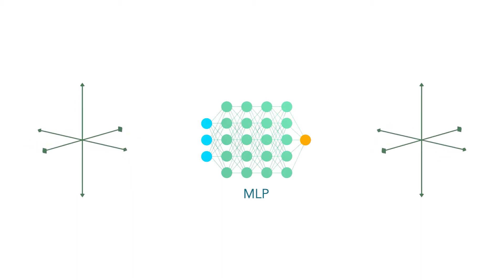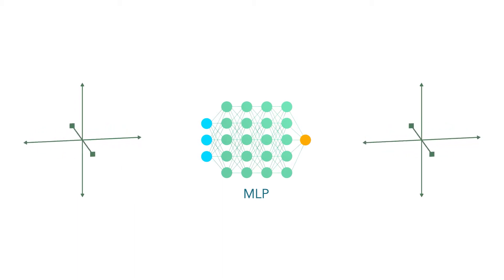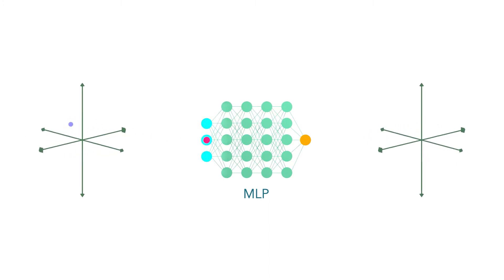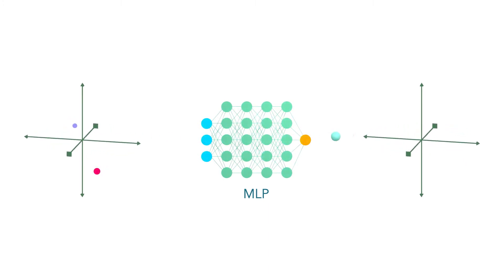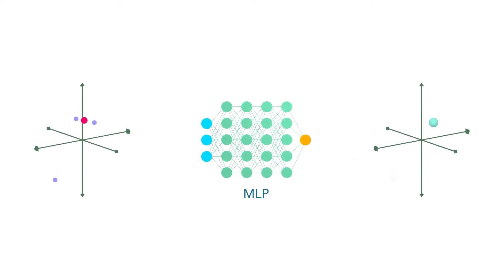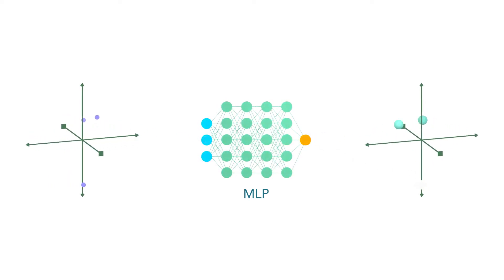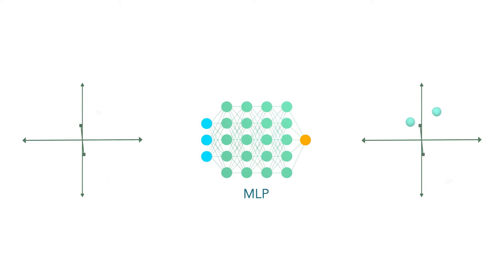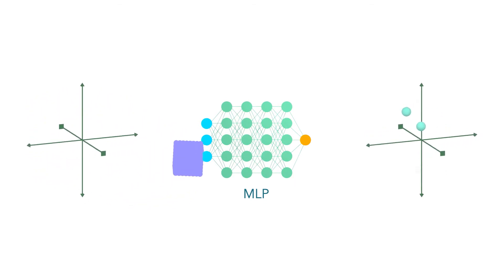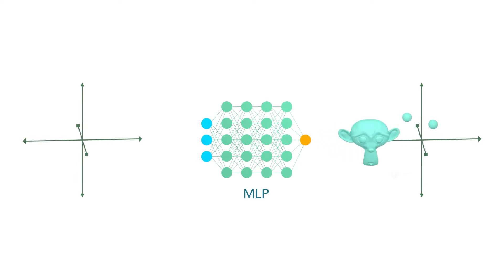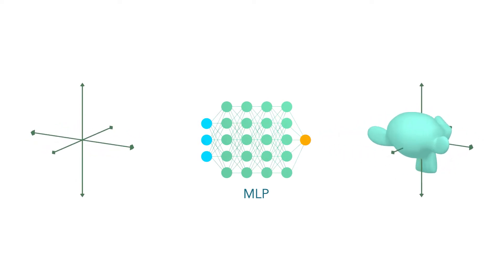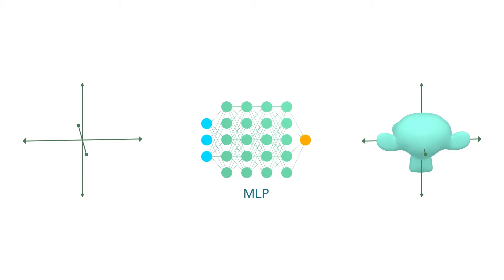For example, an MLP could take in a low-dimensional input, like a 3D coordinate, and output a binary value that indicates whether or not that point lies inside or outside the 3D object. This is fundamentally a continuous representation, and it could be densely sampled to recover the encoded shape. In contrast to typical uses of deep networks to represent high-dimensional functions, here we are trying to get the MLP to represent a complicated function but on a low-dimensional domain.